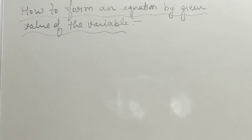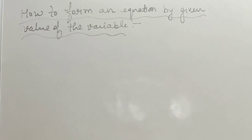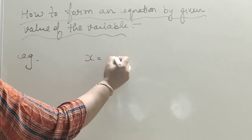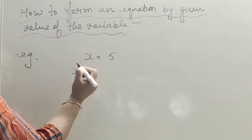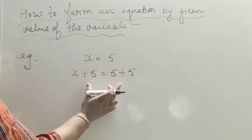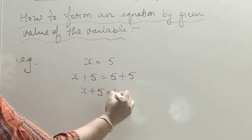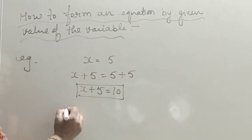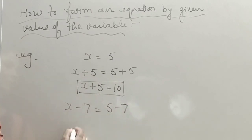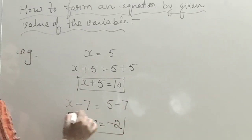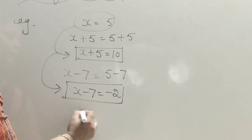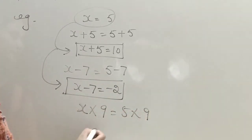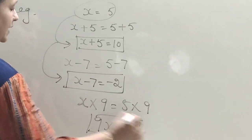The last topic of this chapter is how to form an equation from a given value of the variable. Until now we found the variable from an equation; now we do the reverse. If x equals 5, we can form many equations by performing the same operation on both sides. Adding 5 to both sides: x plus 5 equals 10. Subtracting 7: x minus 7 equals minus 2. Multiplying by 9: 9x equals 45.